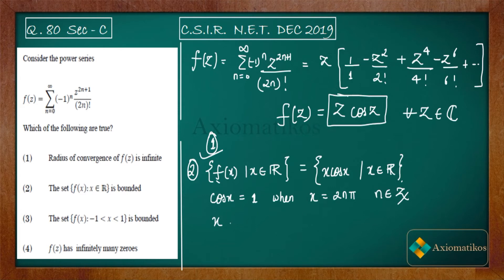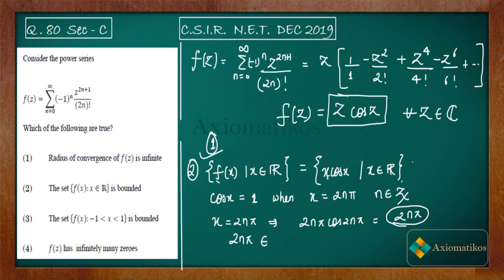If we put x = 2nπ, then f(2nπ) = 2nπ · cos(2nπ) = 2nπ. This means 2nπ belongs to this set for every n. Since 2nπ is a divergent sequence — as n → ∞ this number grows without bound — the set cannot be bounded.